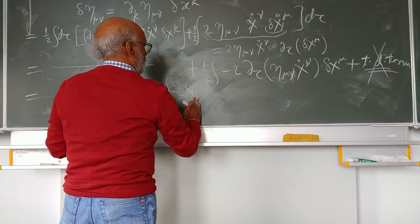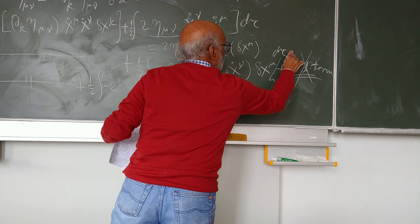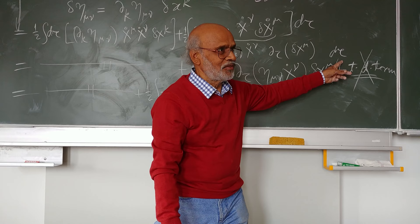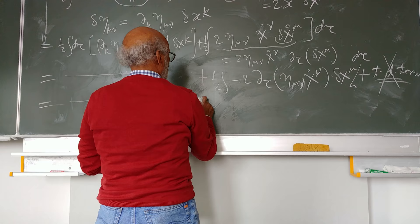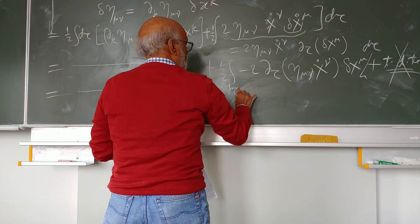And there should still be a factor of d tau. This d tau should still be there. So minus two delta x mu d tau, of course, and one half minus two delta x mu.